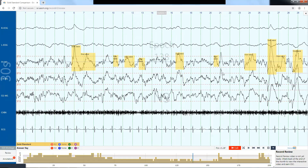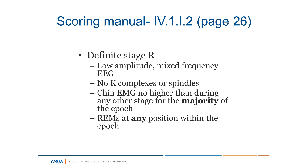Stage R — definite stage R — is defined by low amplitude mixed frequency EEG, absence of K-complexes or spindles, chin EMG no higher than during any other stage for the majority of the epoch, and rapid eye movements at any position within the epoch.